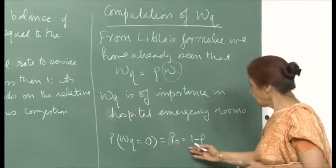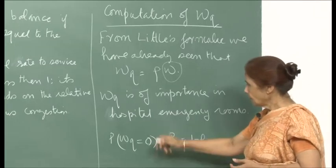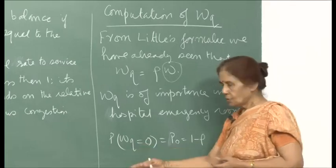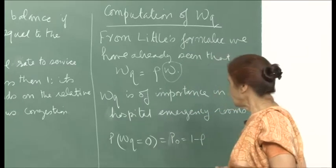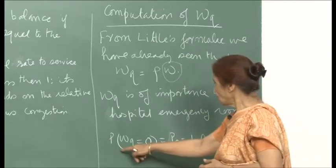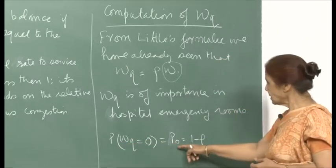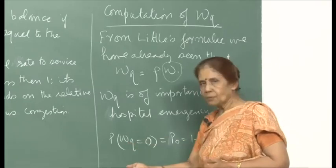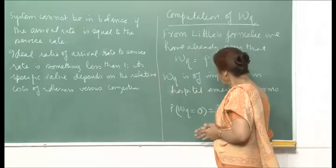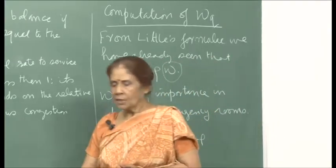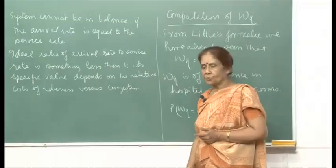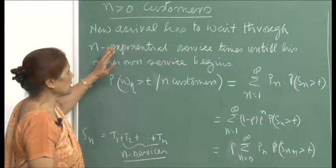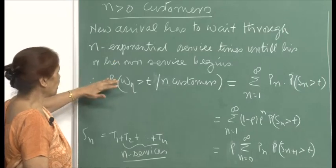We want to look at Wq in greater detail and obtain its distribution. If there is nobody in the system when an arrival comes for emergency treatment, then the waiting time will be 0, because the patient will immediately be taken to a doctor. So, probability that Wq = 0 is p₀, which is 1 − ρ. For n greater than 0 — meaning any customer is already present in the system — the new arrival has to wait through n exponential service times until his or her own service begins.